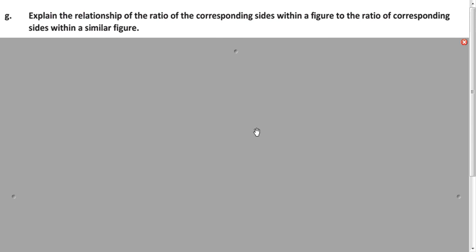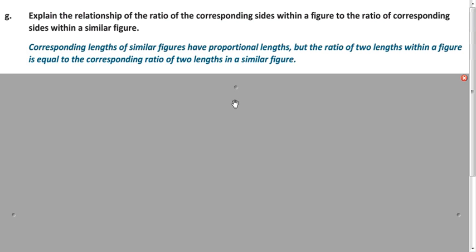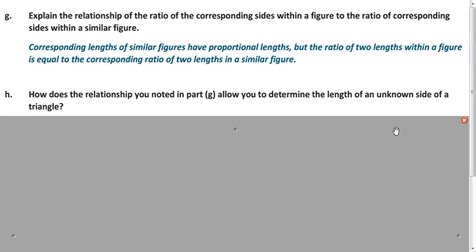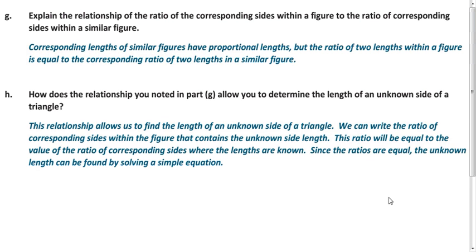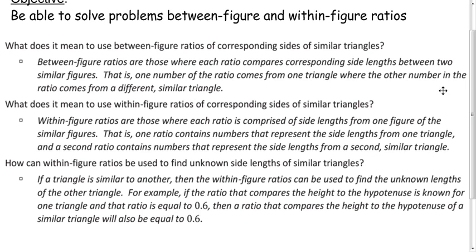The relationship of the ratio of corresponding sides within a figure to the ratio of the corresponding sides in a similar figure: the corresponding lengths of similar figures are proportional, and the ratio of two lengths within a figure equals the corresponding ratio of two corresponding lengths in the similar figure. The within-figure method gives us a ratio, but that's not the same as our scale factor — it's a little bit different. We can write a proportion using those equal ratios and use the cross product. In this lesson, we learned how to solve problems using the between-figure and within-figure ratios. Thank you for watching this video.